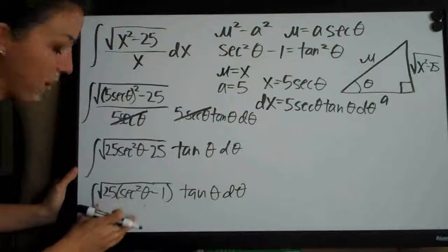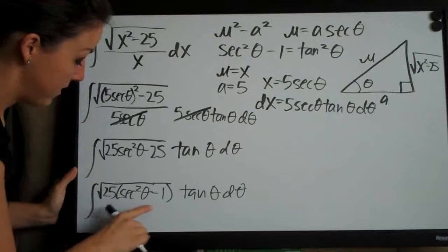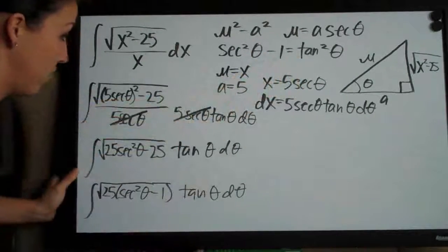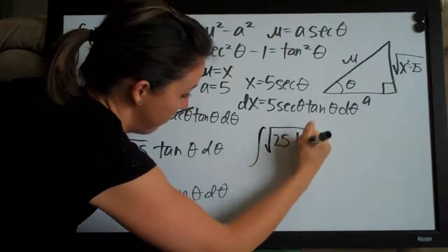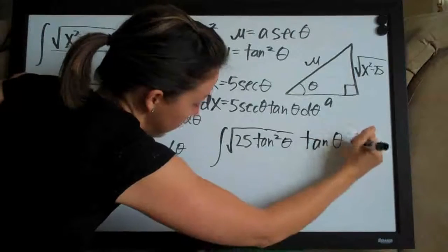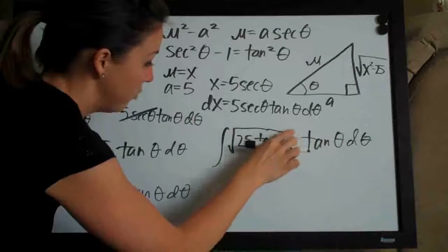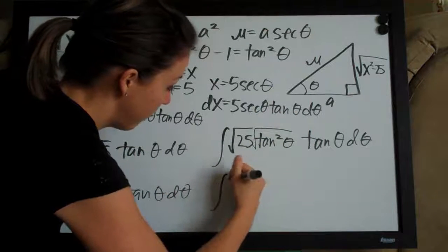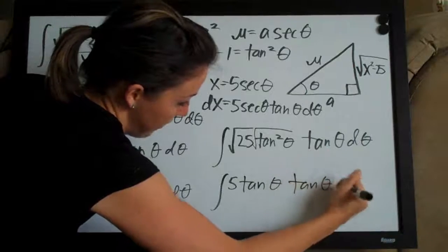We factor what's inside the radical because we'll end up with secant squared theta minus 1, which matches our identity, allowing us to substitute in tangent squared theta. So we get the square root of 25 times tangent squared theta, all times tangent theta d theta. Taking the square root gives us 5 tangent theta, and then multiplied by tangent theta d theta.